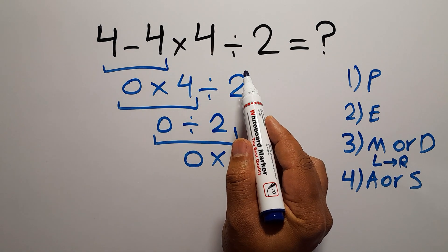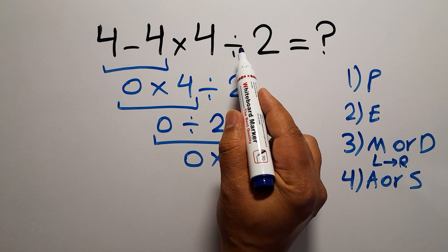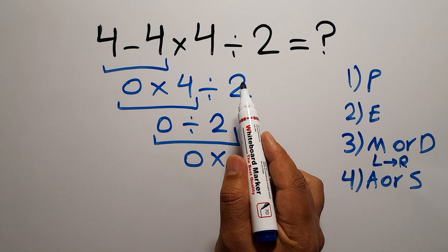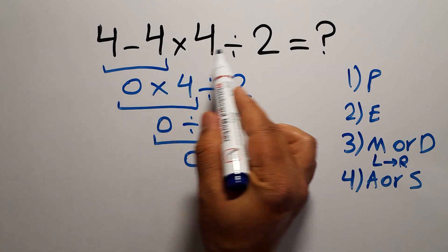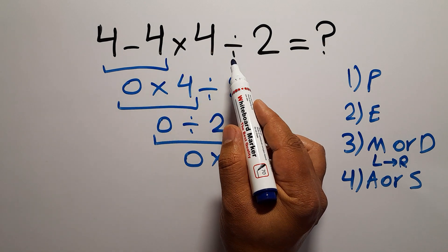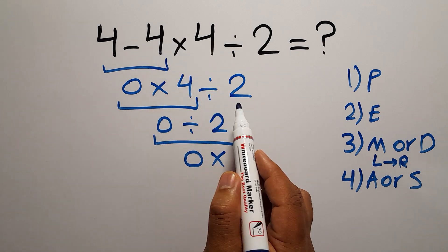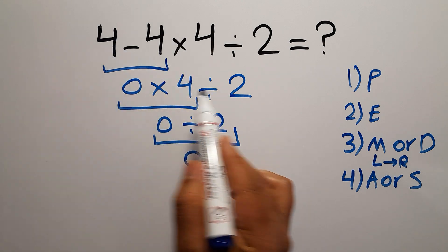As I said, multiplication and division have higher priority than subtraction. Multiplication and division have equal priority, so we work from left to right. First we do this multiplication, then this division, and finally this subtraction.